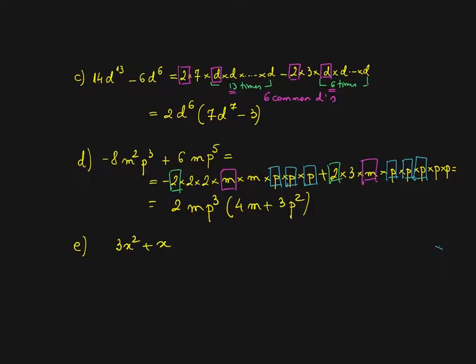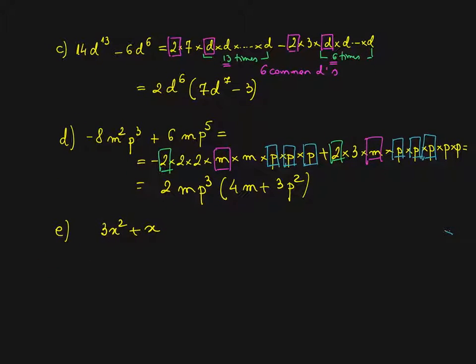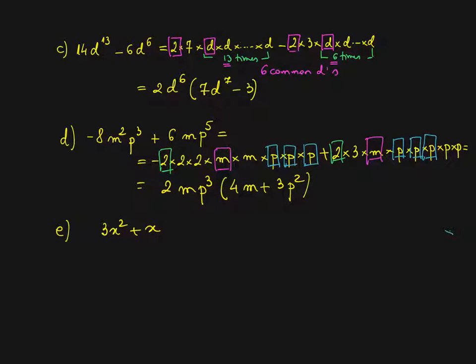We can check by opening the brackets back. 8m squared p cubed, correct? Oh, I forgot the minus. That's why it's always good to check. I still have a minus left here which I forgot to copy in the bracket. So minus 4m. When I open the bracket, minus 8m squared p cubed, correct? Plus 6mp to the power of 5. That's correct.